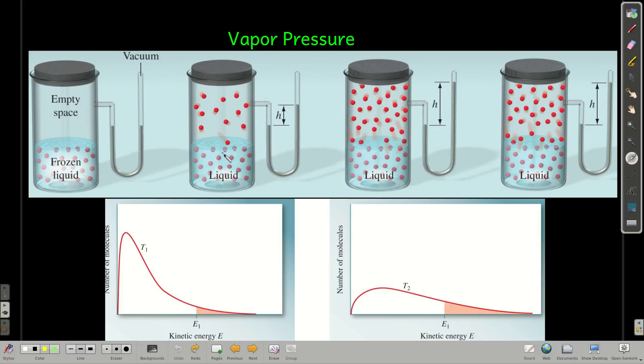And that's going to keep happening until you reach an equilibrium where the number of molecules escaping is equal to the number returning. At that point, however many molecules on average are up here are what determine the pressure up here. That pressure is the vapor pressure of this liquid.